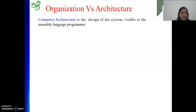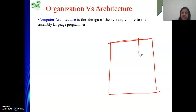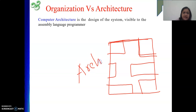In layman's language, first I will explain what is organization and what is architecture. Suppose we are building a house — we will come up with a blueprint of the house. We will design it: here my living room will be, here the kitchen, here the staircase, here one balcony. That design of various parts is what we call architecture in layman's terms.